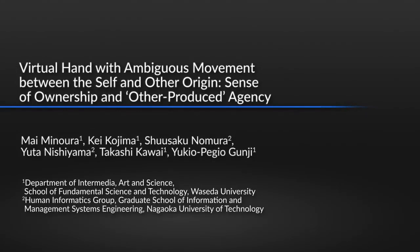While previous research on body self-consciousness has assumed that self and other origin movements are perceptually distinguishable, this protocol allows them to be ambiguous on the virtual hand. This method enables us to observe participants' experience as formed by a sense of ownership and another produced sense of agency, rather than just the absence of these senses.